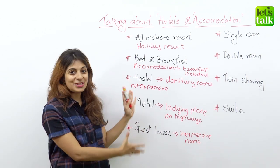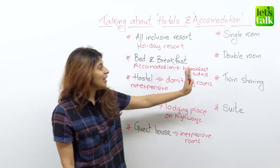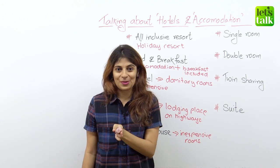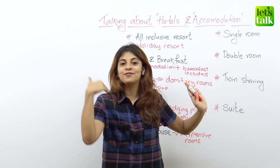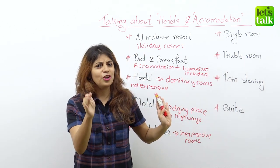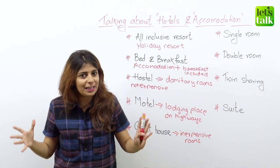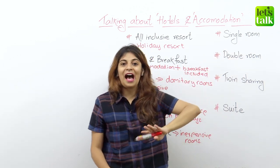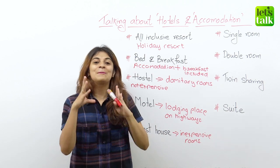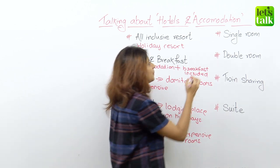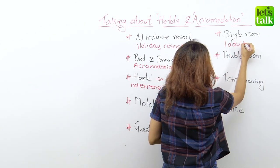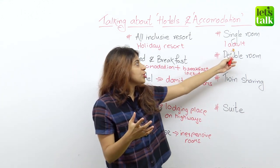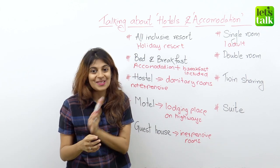So those are the types of hotels and accommodation. Now let's have a look at types of rooms. When you are booking a hotel for your stay, you will always have options of different types of rooms. If you're confused what exactly these rooms mean, then I'm sure this will clear your doubt. The first type of room is a single room. A single room is perfect for one adult — it is a basic room with maybe a queen size bed.